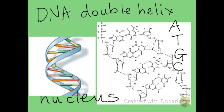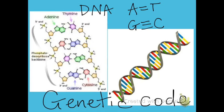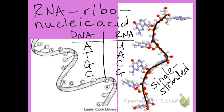A review of DNA: DNA's shape is a double helix. The four bases that make up DNA are A, T, G, and C. DNA is located in the nucleus in eukaryotes. Adenine pairs with thymine, and guanine pairs with cytosine. The bases in DNA are the genetic code — the sequence of the bases determines the traits or characteristics of that organism.